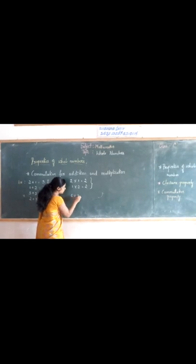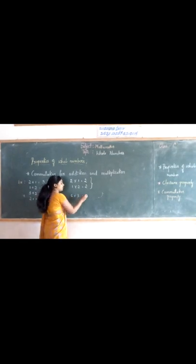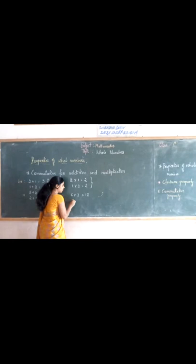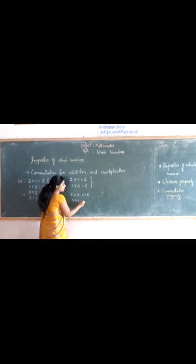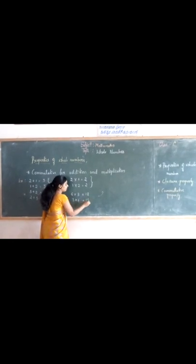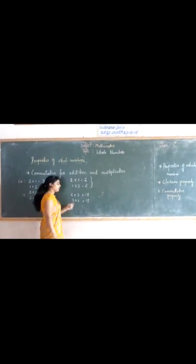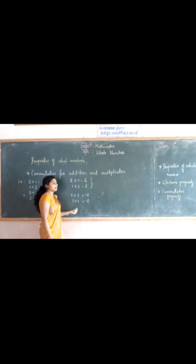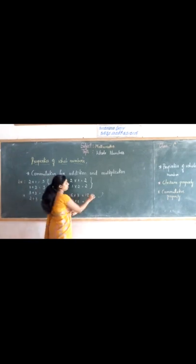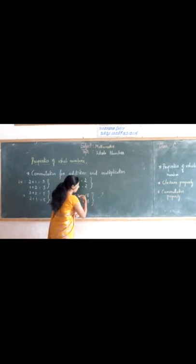Consider another example: 6 into 3, we get 18. And 3 into 6 again we get the same answer, 18. Here also the order of the numbers is changed.